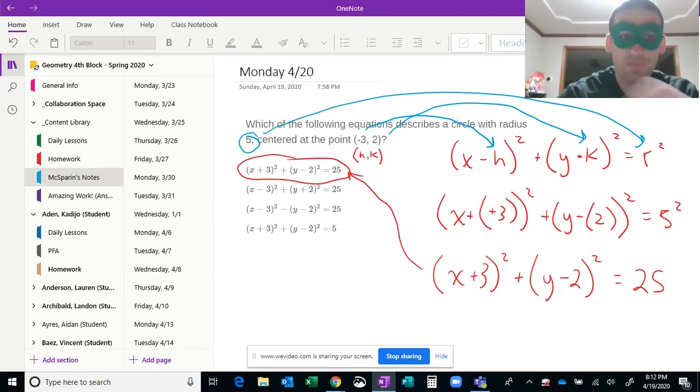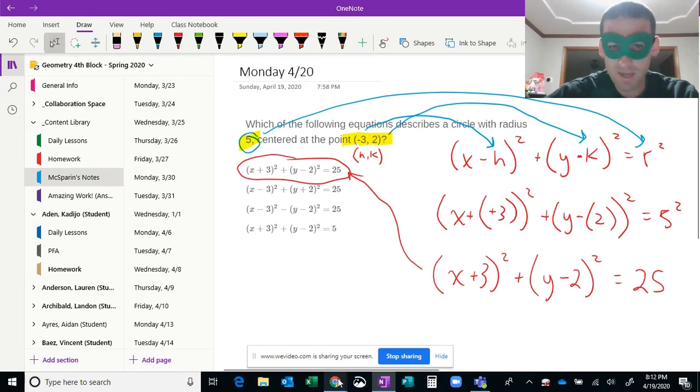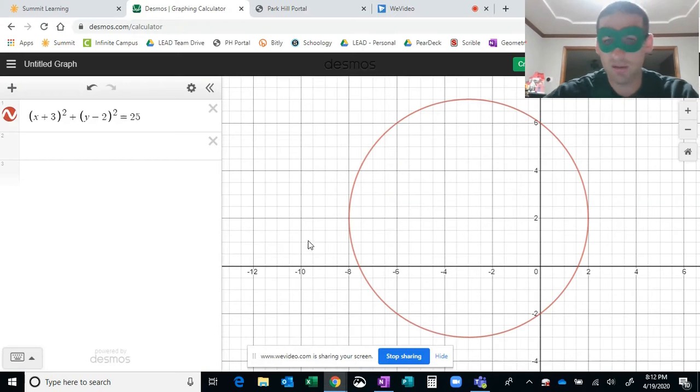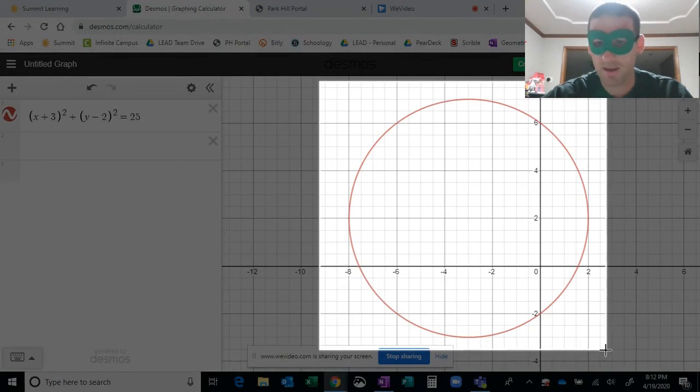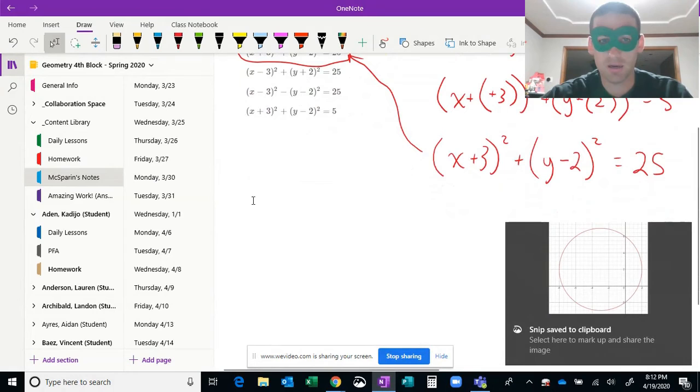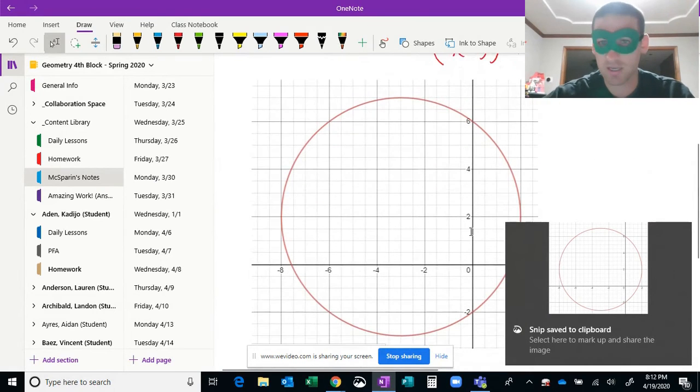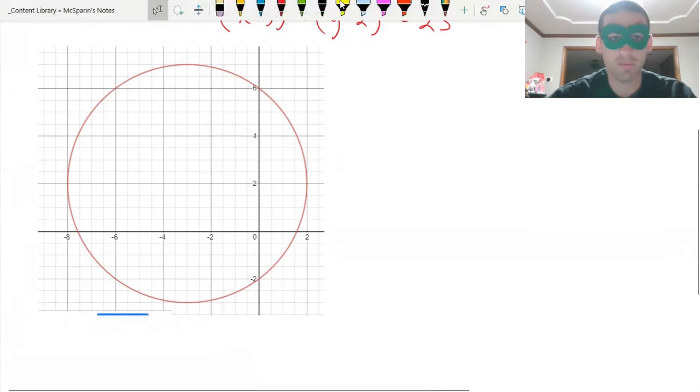Come on, come on, draw. Alright, so that's right there, negative 3, 2, and a radius of 5. Oh actually, let's do this. This will be fun. You guys will be like, oh McSparren, that was cool. I'm gonna, let's snip that. Let's put it in here so I can draw on it. Oh, slick. Don't be too impressed, people.